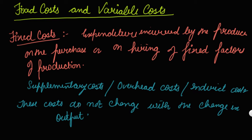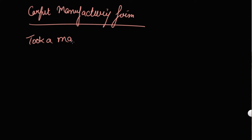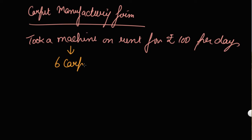Let us understand with the help of an example. There is a producer who has a carpet manufacturing firm. He took a machine on rent for Rs. 100 per day and the capacity of machine is 6 carpets a day.